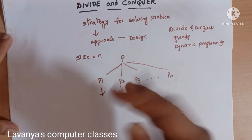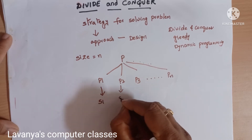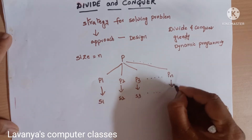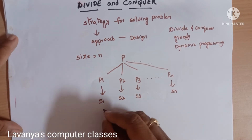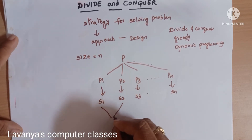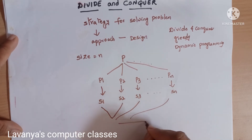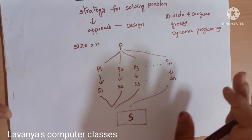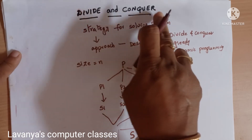After dividing into smaller problems, you find out solutions: solution 1, solution 2, solution 3, and so on up to the nth problem. After solving all the sub-problems, we start combining. Combining all the solutions gives us the solution to the original problem. Like this, we can solve any big problem — this is known as the divide and conquer method.